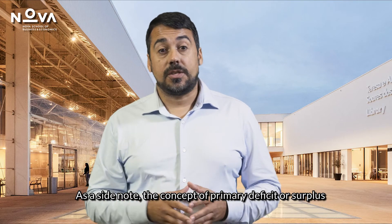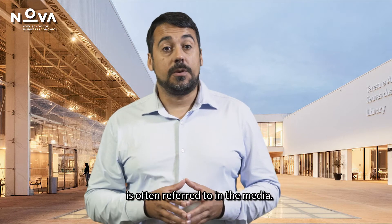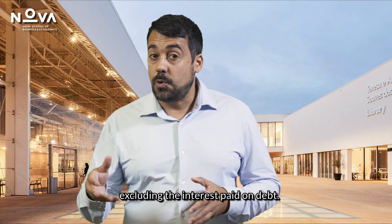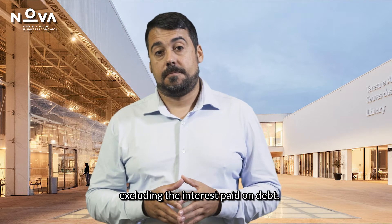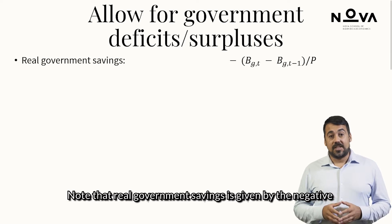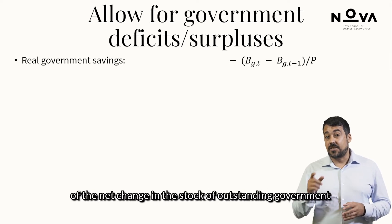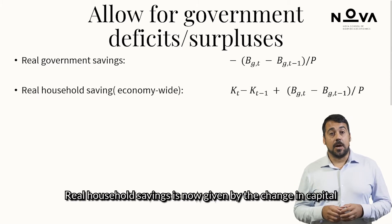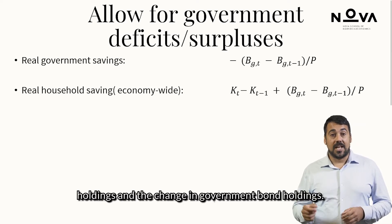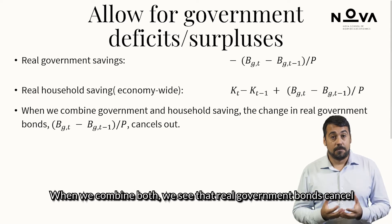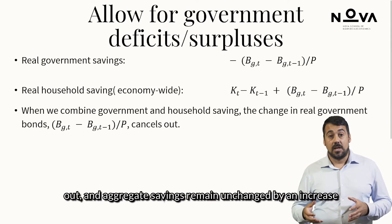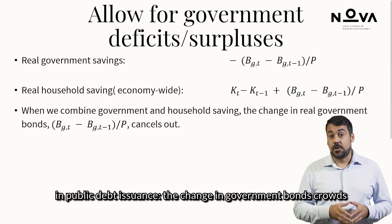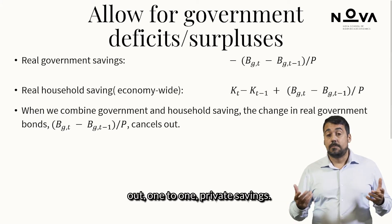As a side note, the concept of primary deficit or surplus is often referred to in the media — this concerns calculating the budget deficit or surplus excluding the interest paid on debt. Real government saving is given by the negative of the net change in the stock of outstanding government bonds divided by the price level. Real household saving is now given by the change in capital holdings and the change in government bond holdings. When we combine both, real government bonds cancel out and aggregate savings remain unchanged by increases in public debt issuance — the change in government bonds crowds out private savings one-to-one.